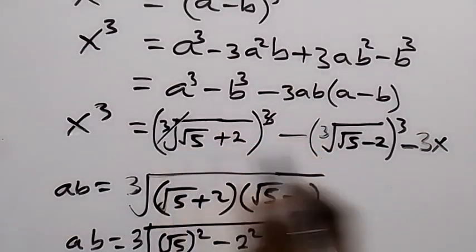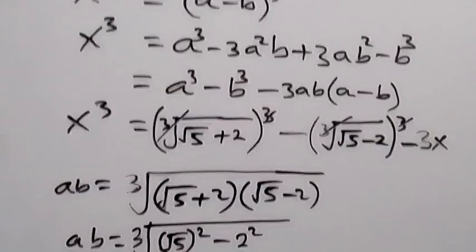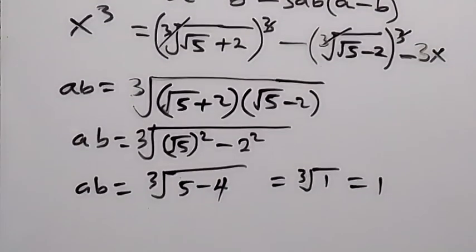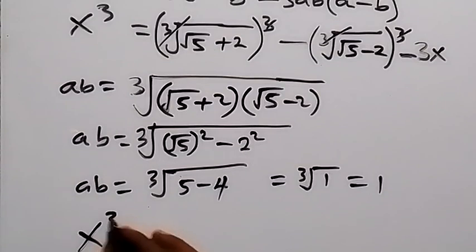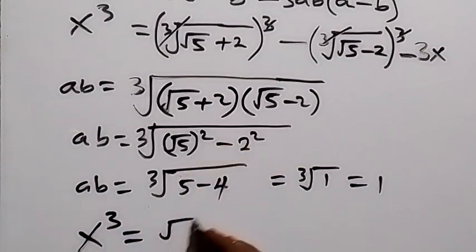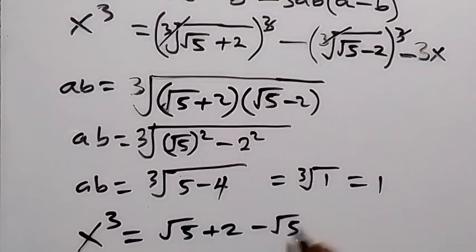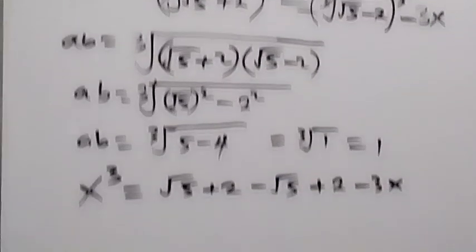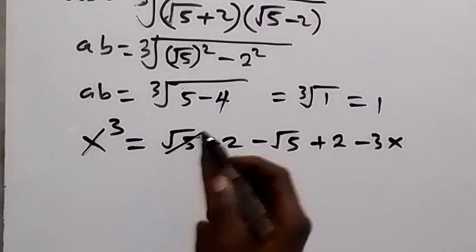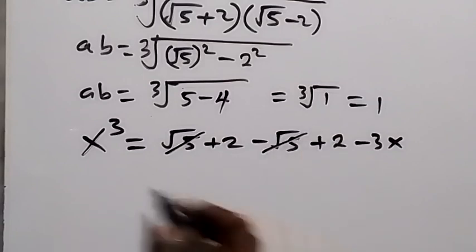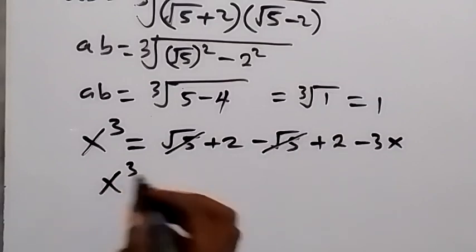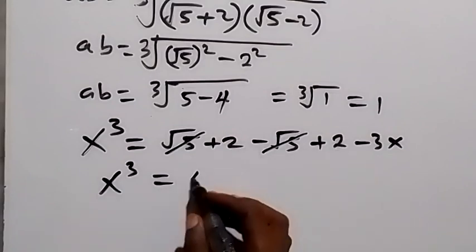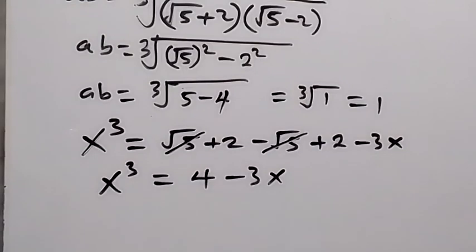The cube roots cancel, leaving x³ equals (√5 + 2) minus (√5 − 2) minus 3x. Expanding the bracket: √5 and −√5 cancel, giving 2 + 2 = 4. So x³ equals 4 minus 3x.